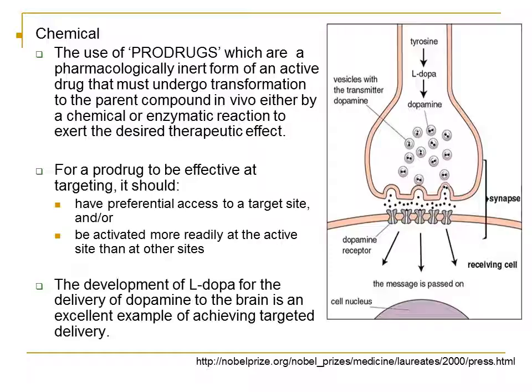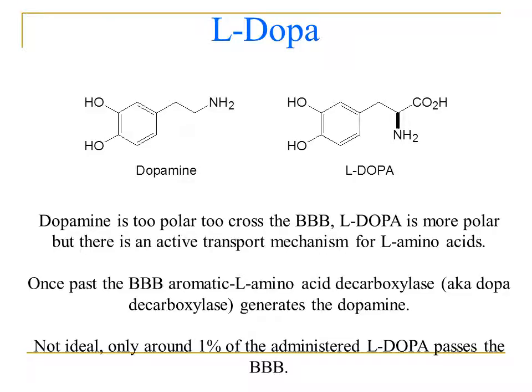One example is the development of L-DOPA, or levodopa, for the delivery of dopamine to the brain in the treatment of Parkinson's disease. You can see the differences between dopamine and L-DOPA. Dopamine is too polar to cross the blood-brain barrier (BBB). L-DOPA is more polar, but there is an active transport mechanism for L-amino acids. Once past the blood-brain barrier, aromatic L-amino acid decarboxylase generates dopamine.